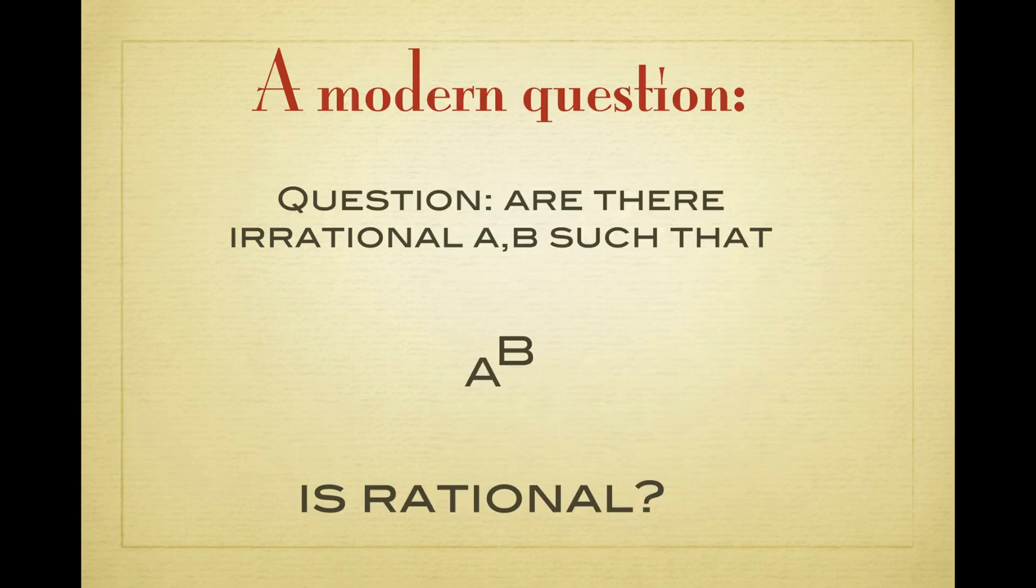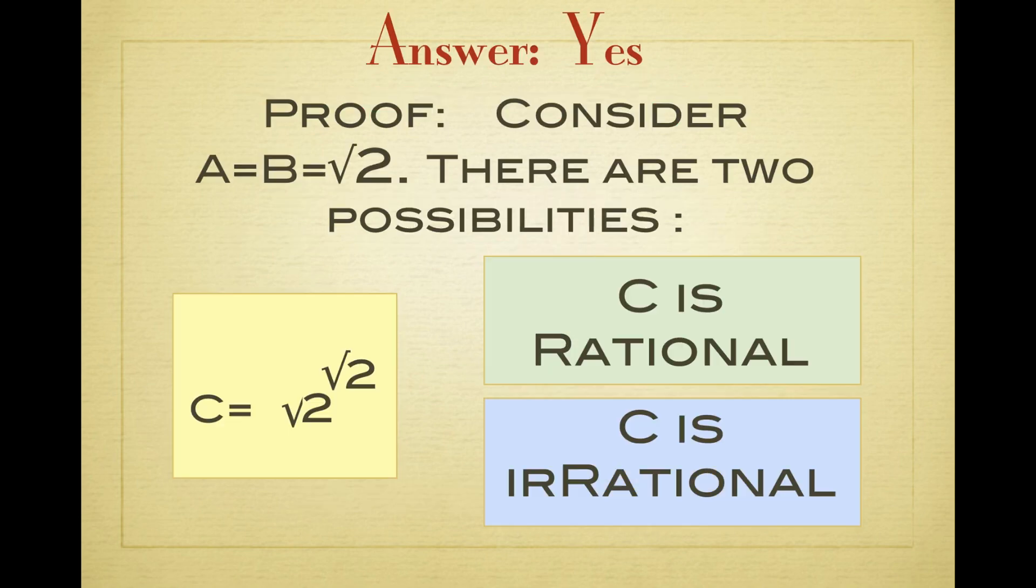Let's discuss another question, a question whether there are irrational real numbers a and b such that a to the b is rational. The answer is yes, there is such an example.